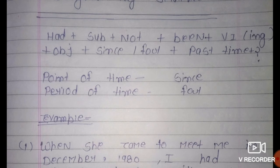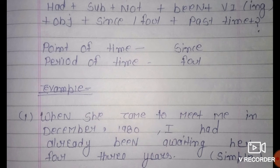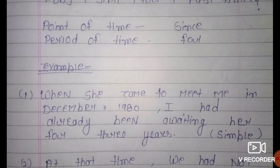Point of time ke liye 'since' ka use karte hain. Period of time ke liye 'for' ka use karte hain. Point of time means koi bhi exact time — jaise 9 o'clock, 7 o'clock, Monday, 1956, 25 January, 26 January — koi bhi fix date. Period of time means 2 ghante se, 4 dinon se — jisme hame exact time nahi pata, toh wahan 'for' ka use hota hai.